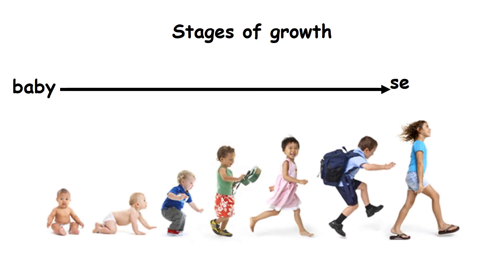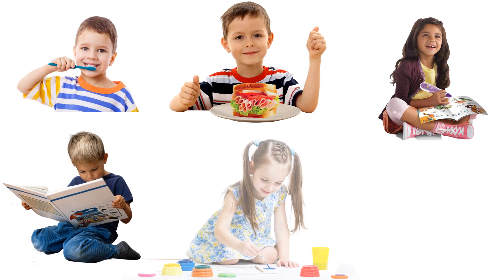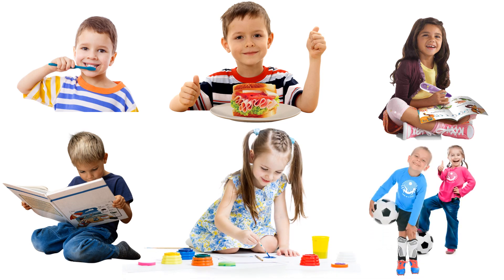Stages of growth. You have grown from being a baby to a 7 year old child. Now you can brush, eat, read, write, draw and play many games on your own.